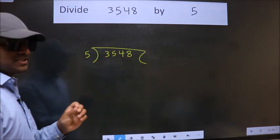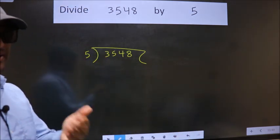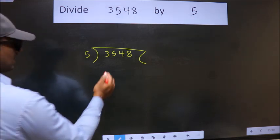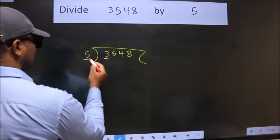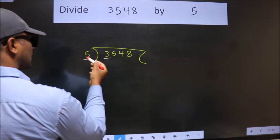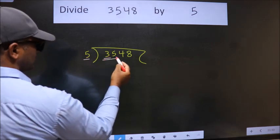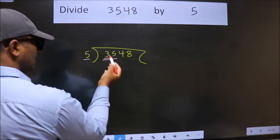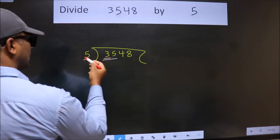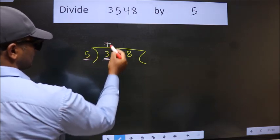This is your step 1. Next, here we have 3, here 5. 3 is smaller than 5. So we should take two numbers, 35. When do we get 35 in the 5 table? 5 times 7 is 35.